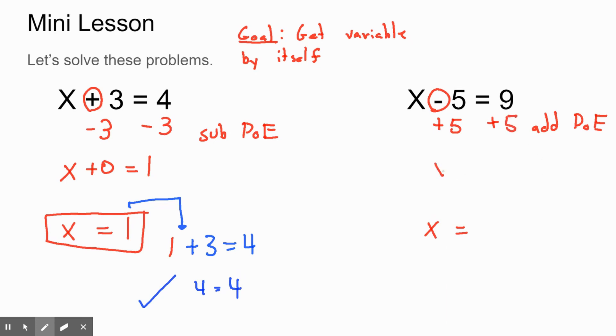When we do that, we get x minus 0, which is just x. 9 plus 5 is 14. So we know that x should equal 14. That one you might not have been able to do as easily in your head. Maybe you could, but it's possible.